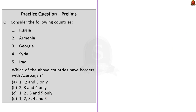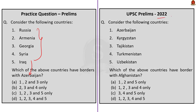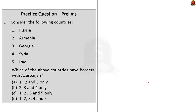The next question asks which of these countries have borders with Azerbaijan. UPSC asked a similar question in the 2022 prelims about the bordering countries of Afghanistan. Azerbaijan has been frequently in news because of border disputes with Armenia, so there is a chance UPSC might ask about its location or borders. Five countries are given — Russia, Armenia, Georgia, and others — and we need to identify which share borders with Azerbaijan.